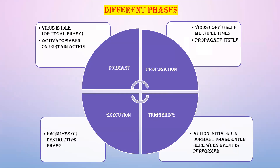Now we will see in detail the different phases of a virus. There are four phases: dormant, propagation, triggering, and execution. In the dormant phase, the virus is idle — it doesn't do anything and waits for some action to happen. In the propagation phase, it starts propagating and attaches to every file. In the triggering phase, the action is performed so that the virus in the dormant phase gets triggered and starts attaching to each file.